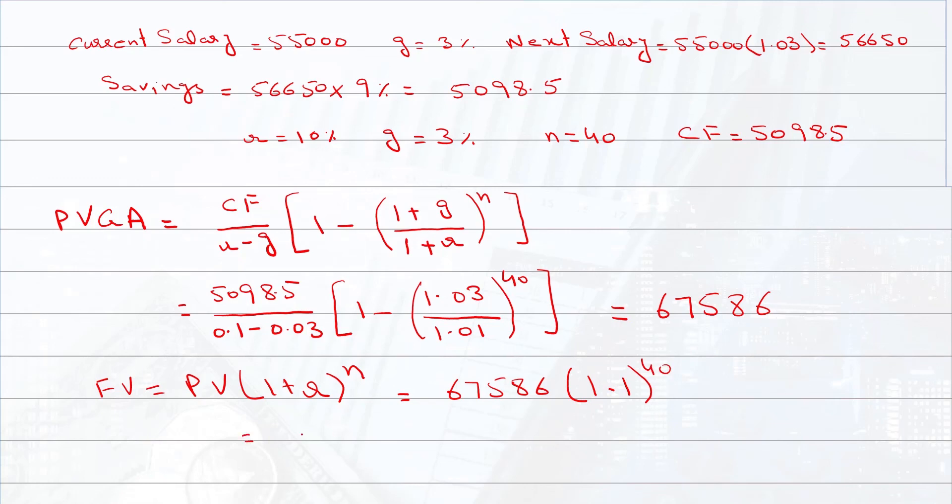And the answer is $305,888.97. So this will be the amount that you will have after 40 years when you retire.